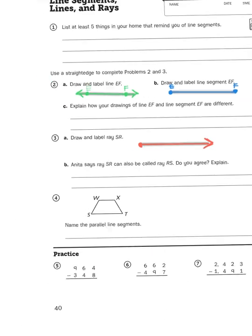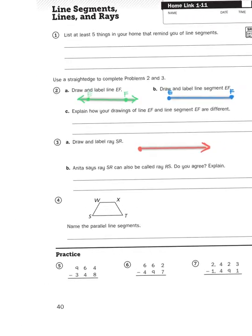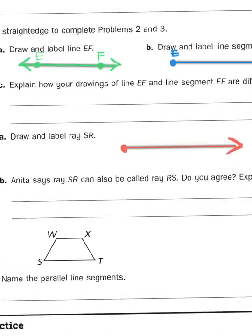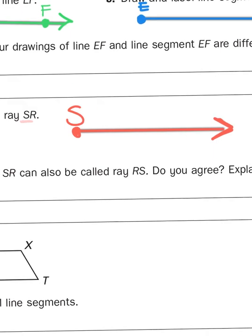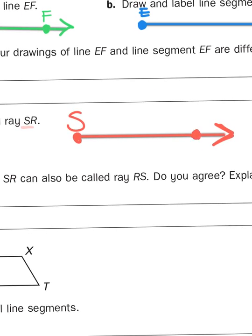So it says, draw and label ray SR. So when you are labeling a ray, you always, always, always start with the first letter in the name, and that's what goes over your end point S. And then R is just going to be a point somewhere along this ray. So we'll put it right here.